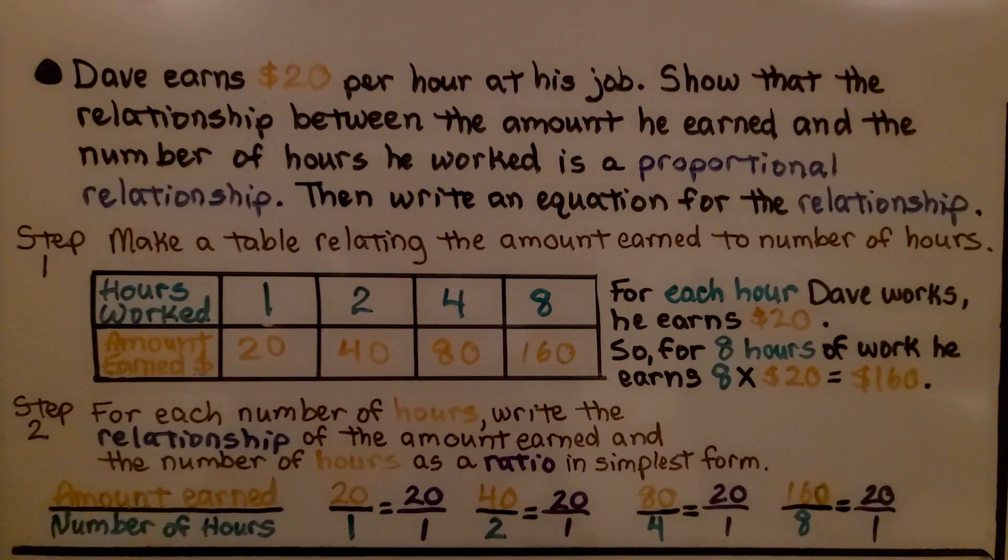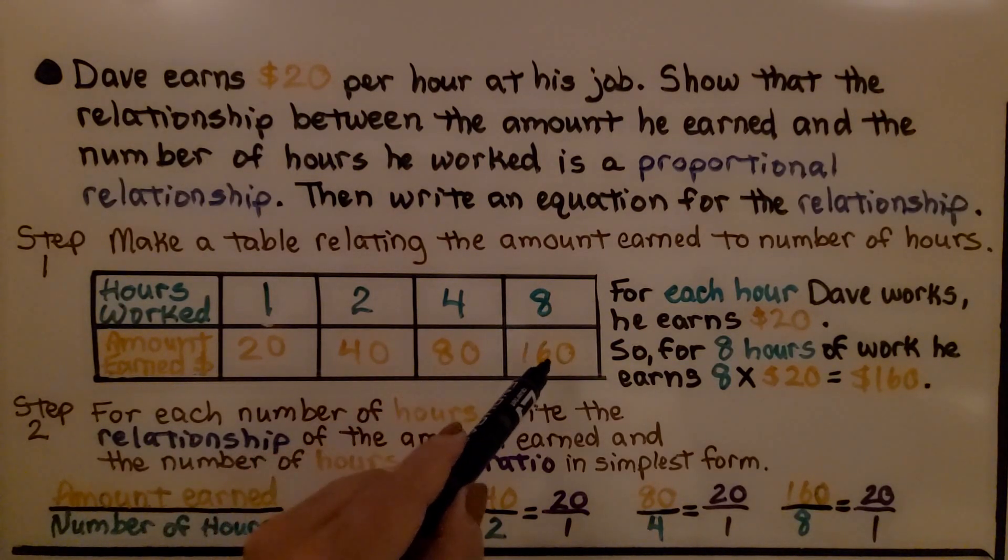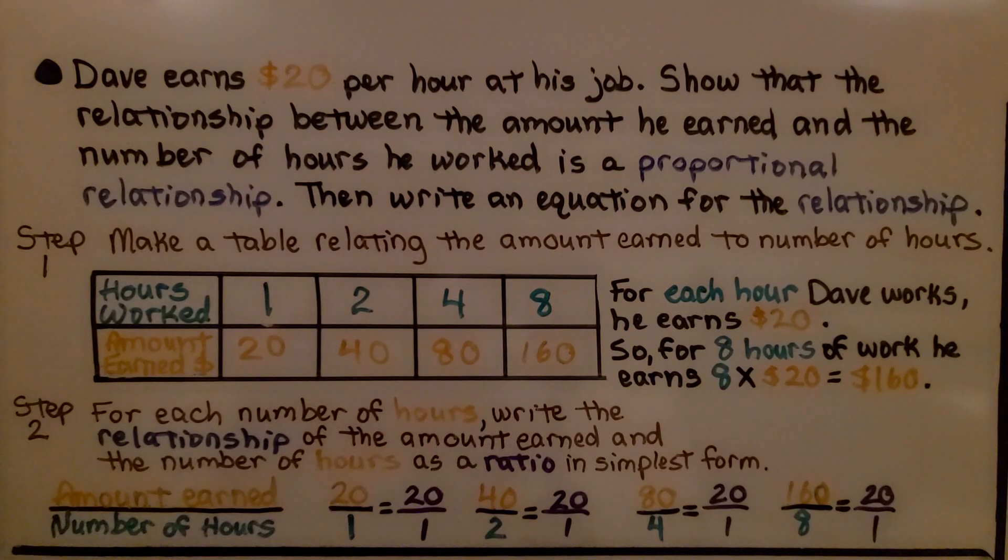For each hour Dave works, he earns $20. So for 8 hours of work, he earns 8 times 20, $160.